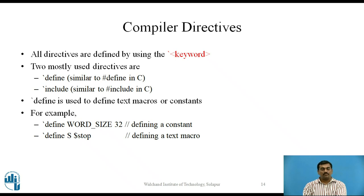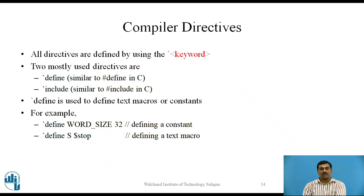Two examples of backtick define are given. The first example defines a text macro that defines a default word size of 32 bits, referred to in the code using the name word_size. The second example defines an alias, where the $stop task will be substituted wherever the character capital S appears.